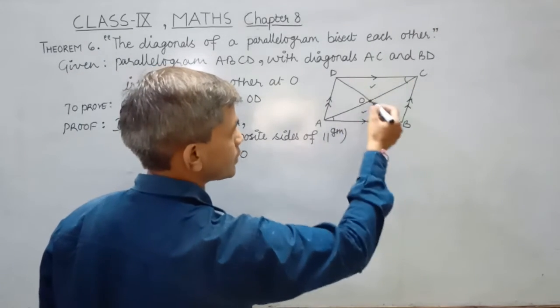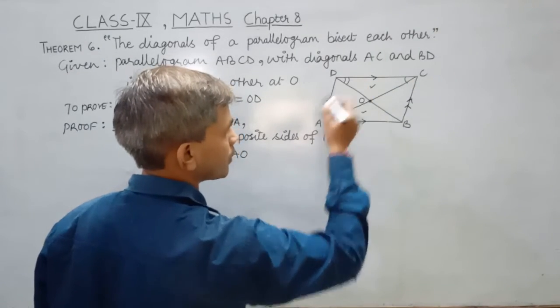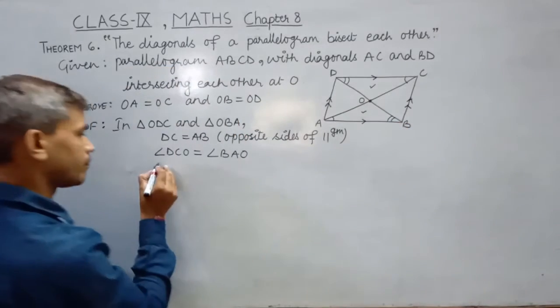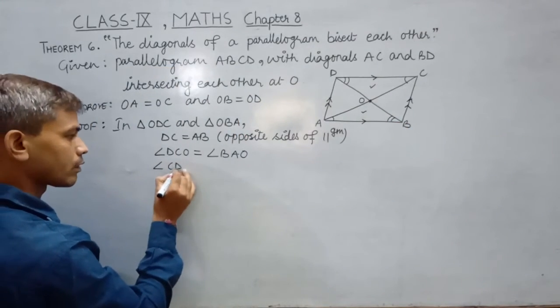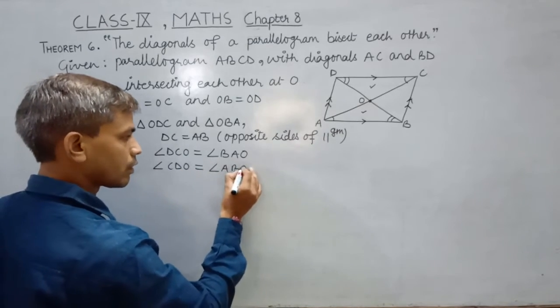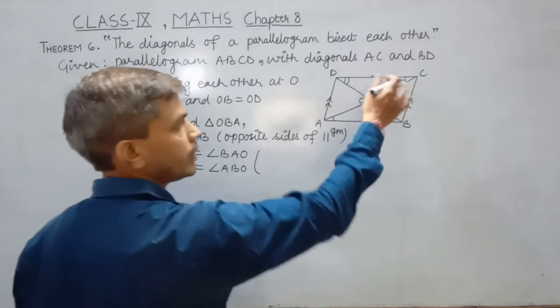And angle CDO is equal to angle ABO. These are alternate interior angles.